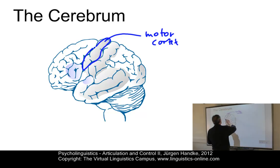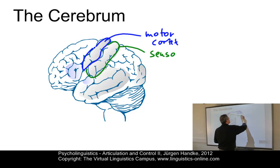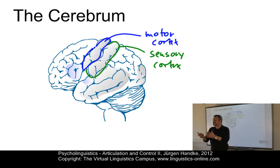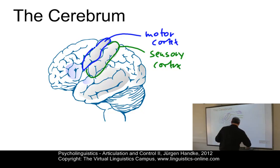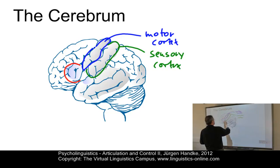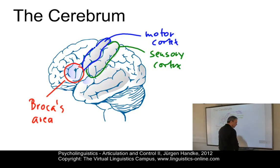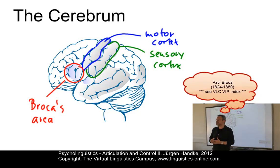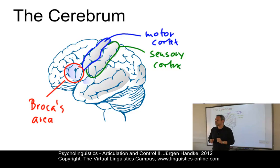Right next to the motor cortex, we find the sensory cortex, which is responsible for the control of sensory actions. Here in the frontal lobe, we have Broca's area, named after the French physiologist Paul Broca, who lived in the 19th century. Broca's area is involved in the movement of the articulators and appears to control speech aspects of the oral tract.